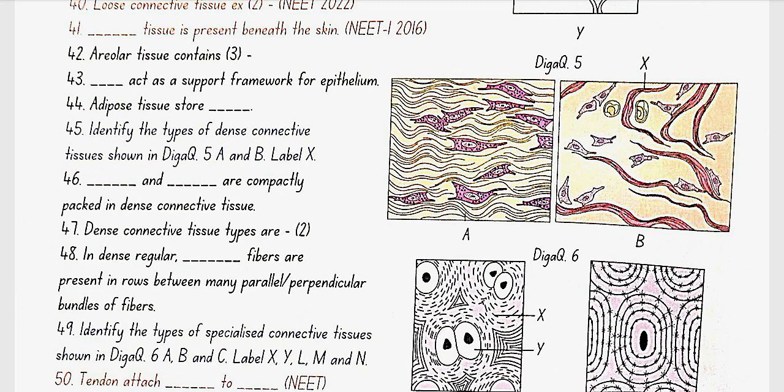In dense regular, collagen fibers are present in rows between many parallel bundles of fibers.